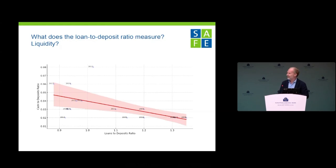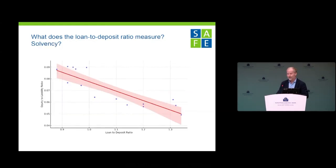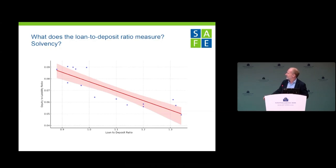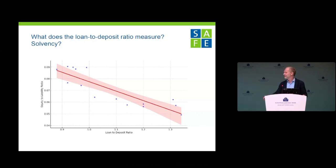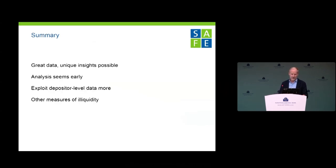Similarly, banks with high loan-to-deposit ratios also have lower equity-to-assets ratios — meaning it's also a measure of potential insolvency. So we're back to the usual problem: is it liquidity or insolvency? I think it'd be nice to have some robustness on that. To summarize: great data, unique insights possible, but the analysis seems early. I'd encourage exploiting the deposit level much more since that's your unique selling point, and providing more robustness on the loan-to-deposit ratio as a measure.